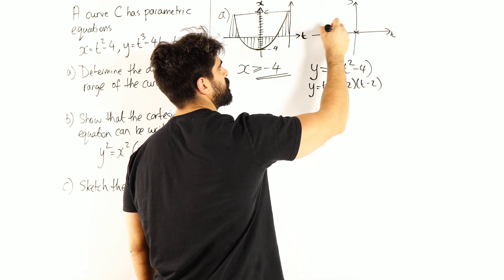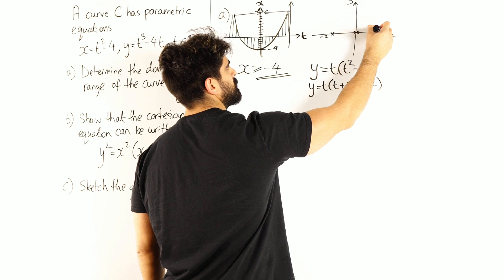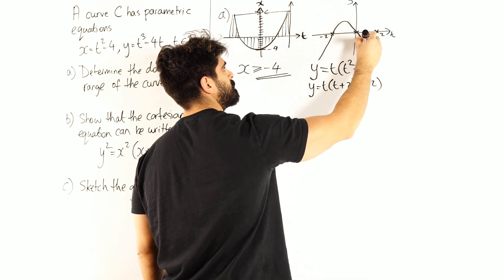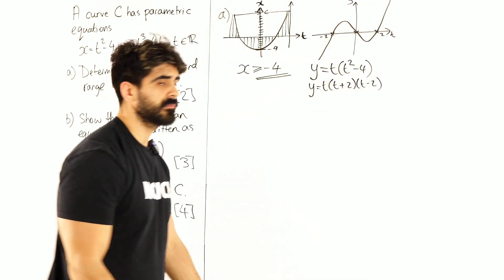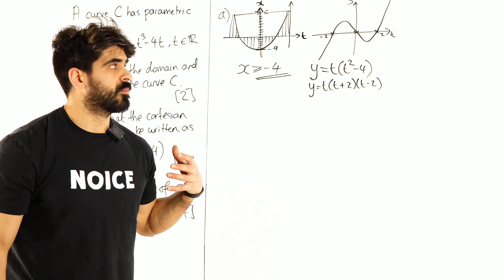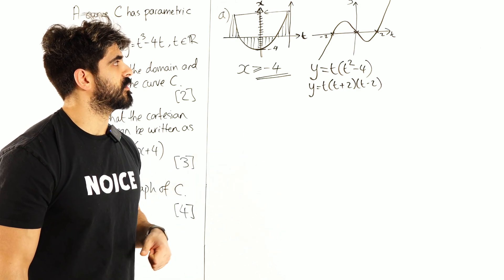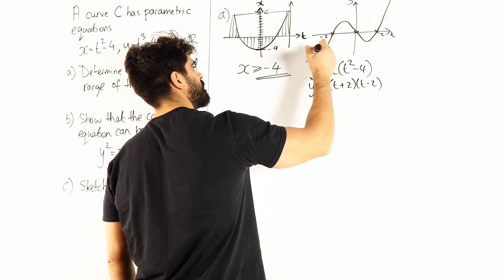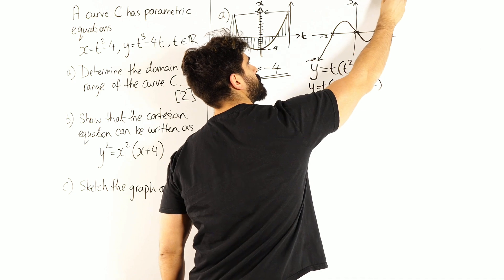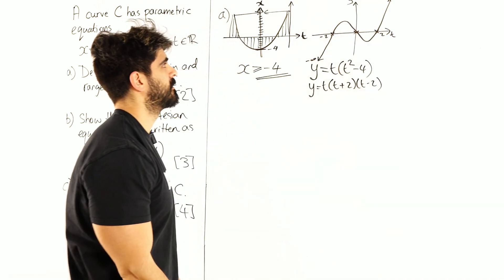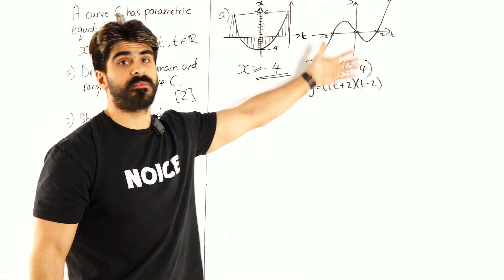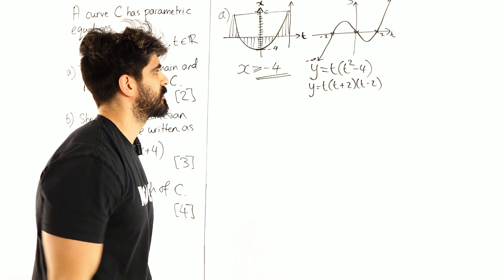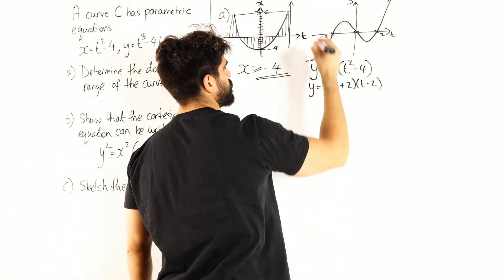So that goes through 0, minus 2, and 2, and it's a positive cubic. Alright, now what are the y values defined for here? Well actually, this is going down to negative infinity, and this is going up to infinity, infinity and beyond that. So it just means all the y values are defined here. So y is going to go up to infinity and down to minus infinity for all values of t.